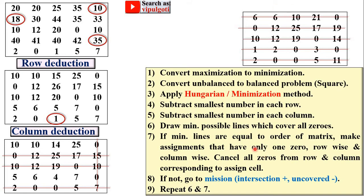Start the assignment with single zeros, row by row. Pick the first row having a single zero and assign it, then cancel all zeros from the corresponding row and column. Repeat for the second row — assign the single zero and cancel. Third row: assign the single zero and cancel. Fourth row: assign the single zero and cancel. Fifth row: assign the single zero and cancel. All assignments are now complete.